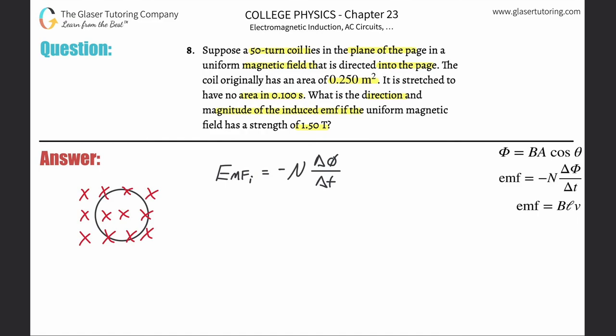Here's the formula for magnetic flux, and therefore the change in magnetic flux could be equal to the change in the magnetic field. Now the magnetic field isn't changing, but what's changing is the area in this problem, so it's basically the change in area multiplied by the cosine of the angle.